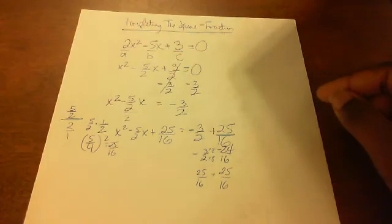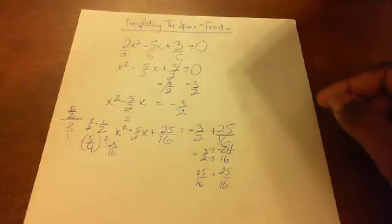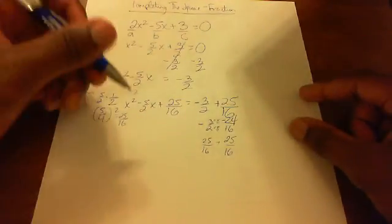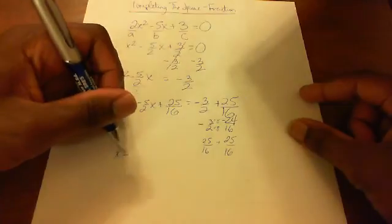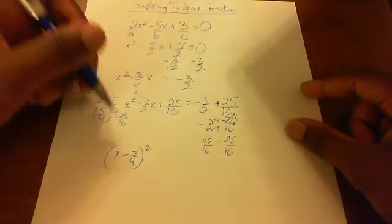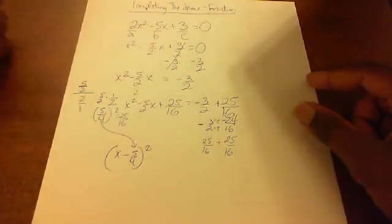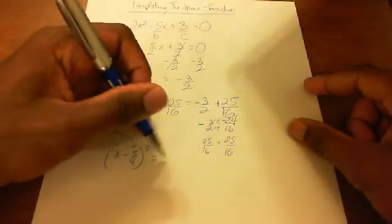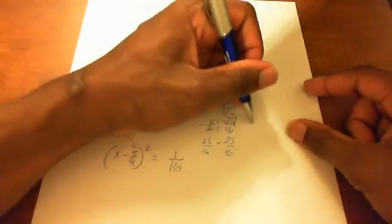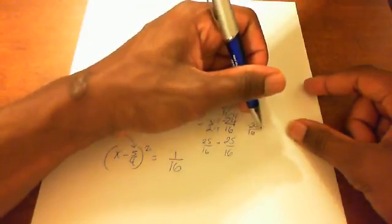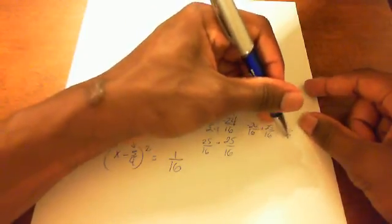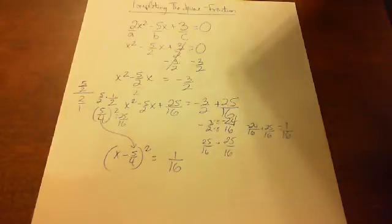Negative 24 plus 25 is positive 1. So now we're gonna get (x - 5/4)² = positive 1/16, because -24/16 + 25/16 = 1/16. Make sure you have that down, don't mess that up.